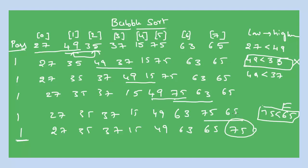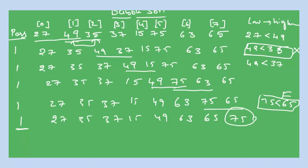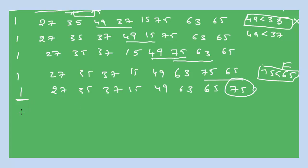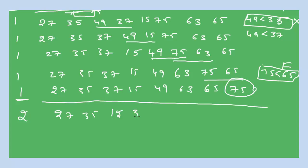Now proceed with the second pass. The second pass takes the values from the first pass. Compare 27 and 35 — condition is true. Compare 35 and 37 — condition is true. Compare 37 and 15 — condition is false, so swap: 15 and 37. Array becomes: 27, 15, 35, 37, 49, 63, 65, 75. Compare 37 and 49 — true. Compare 49 and 63 — true. Compare 63 and 65 — true. Compare 65 and 75 — true.